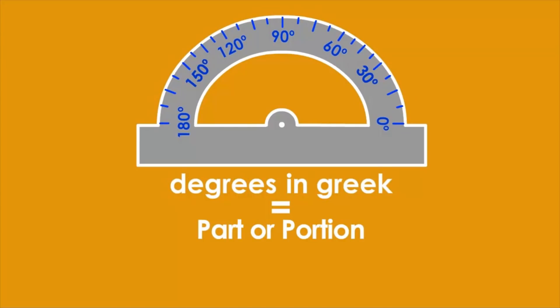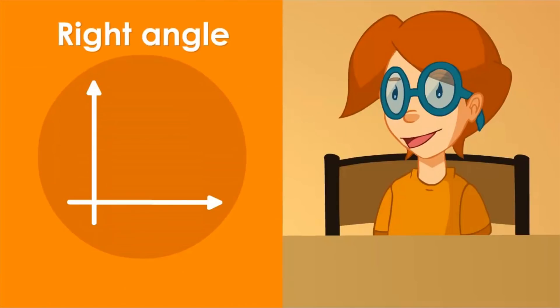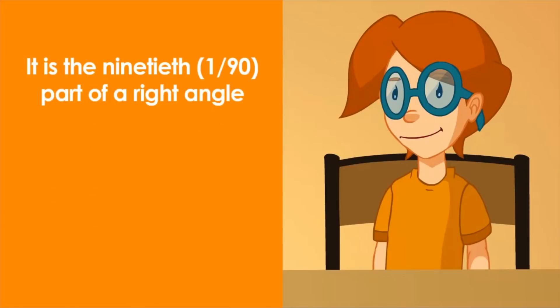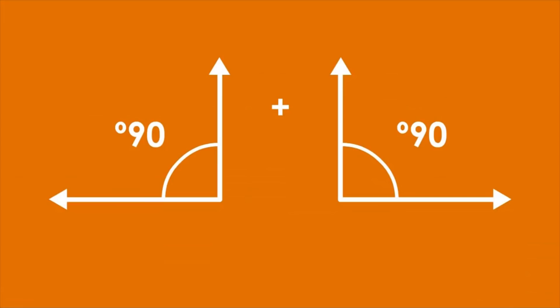The arc degree is the 90th part of a right angle. We call right angle to each part formed at the intersection of two perpendicular straight lines. Does that mean that we can divide the right angle into 90 equal parts?